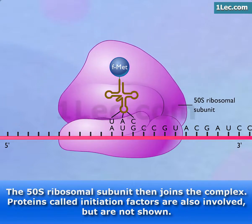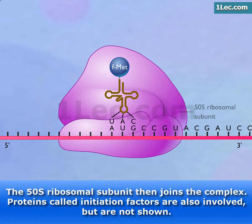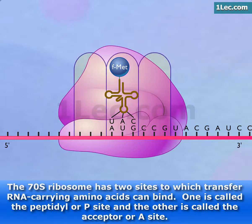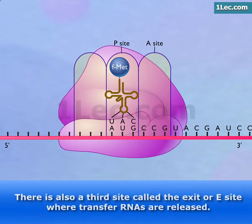Proteins called initiation factors are also involved but are not shown. The 70S ribosome has two sites to which transfer RNA-carrying amino acids can bind. One is called the peptidyl or P-site and the other is called the acceptor or A-site. There is also a third site called the exit or E-site where transfer RNAs are released.